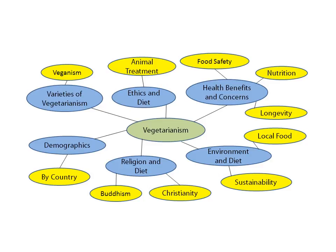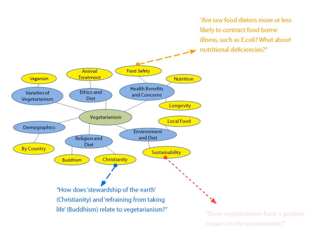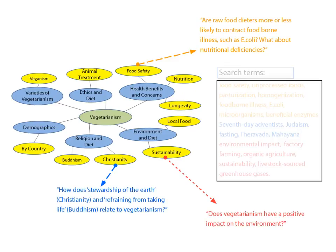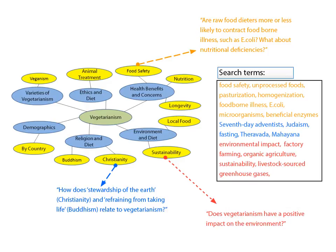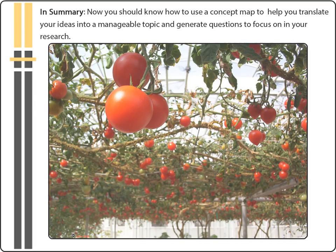Exploring these relationships, and what dependencies there are between each, is a good way to generate a list of research questions for our topic, and to identify keywords and synonyms useful for our research. In summary, now you should know how to use a concept map to help you translate your ideas into a manageable topic, and generate questions to focus on in your research.